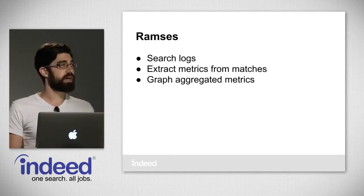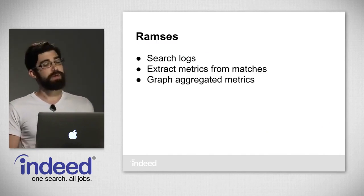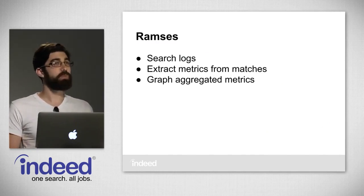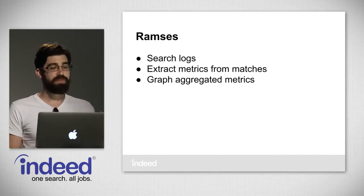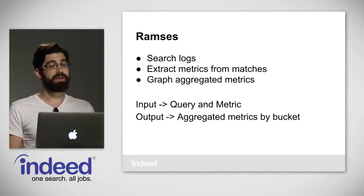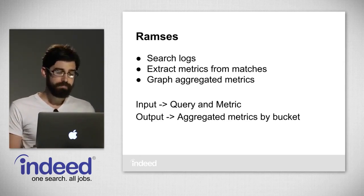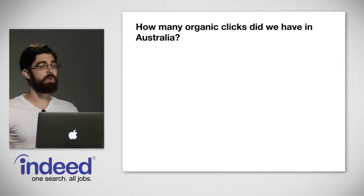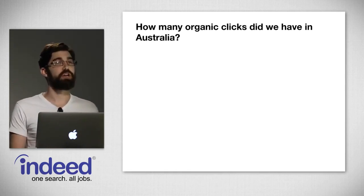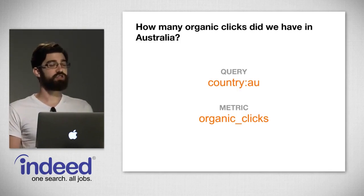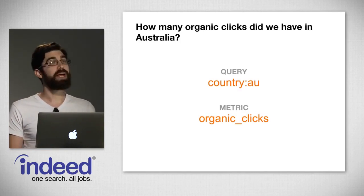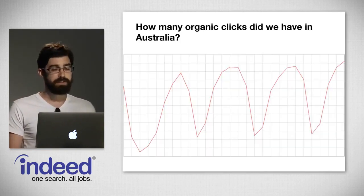We'd build an inverted index out of all our logs, search through them, extract metrics from the matches, and then graph those aggregated metrics. The way we'd get information out of it was we'd put in a query and a metric we wanted, and it would output aggregated metrics by bucket. For example, let's say we wanted to know how many organic clicks we have in Australia: query country colon AU, metric organic underscore clicks. We'd put in the query country Australia, ask for the metric organic clicks, and it would return a result.